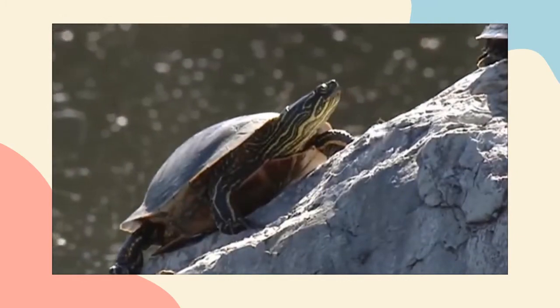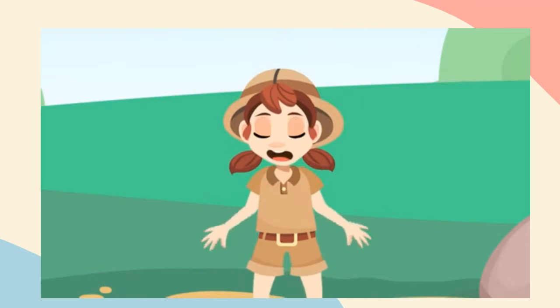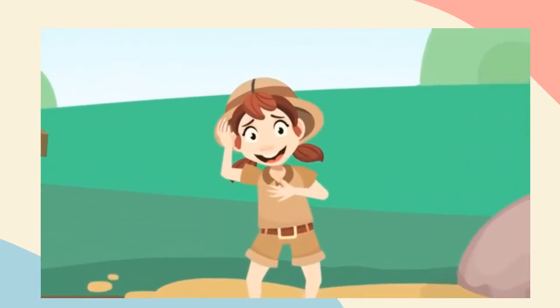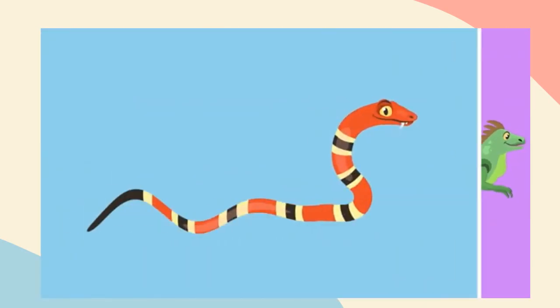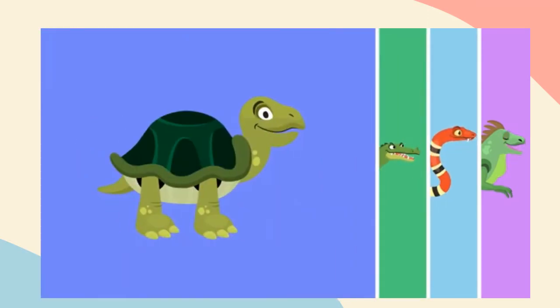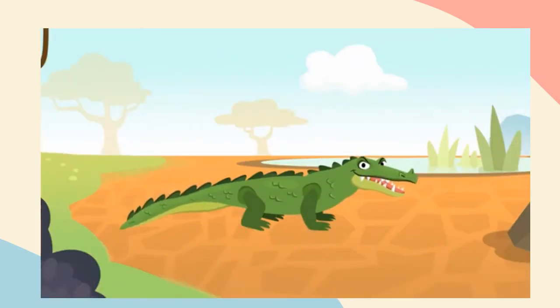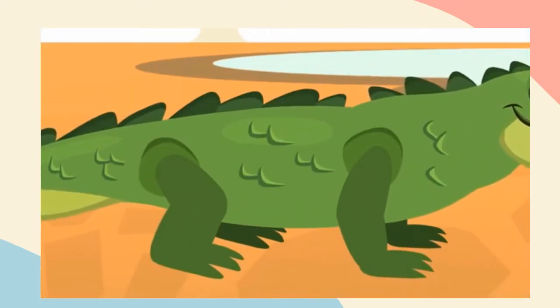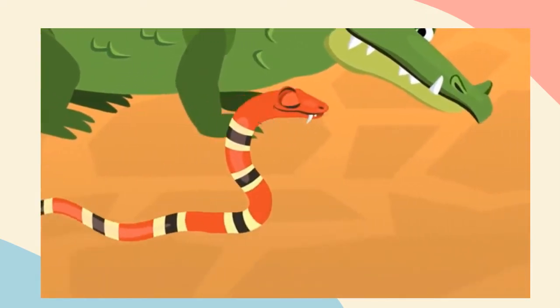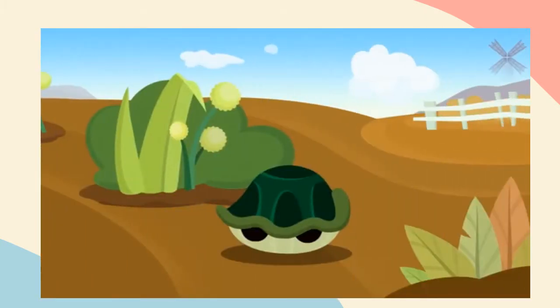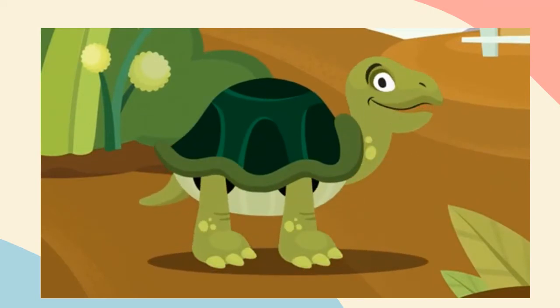Today we are going to talk about another group of vertebrates — reptiles. Reptiles are oviparous animals, meaning they are born from eggs. Their bodies are covered in hard scales. Their legs are really short. Actually, some don't even have legs, like snakes. Some reptiles have a shell, like a turtle.